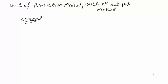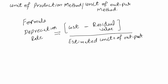The unit of production method is also known as the unit of output method. It is basically a depreciation method in which we charge the depreciation expense to a fixed asset. We will use the following formula to calculate the depreciation expense under the unit of production method.